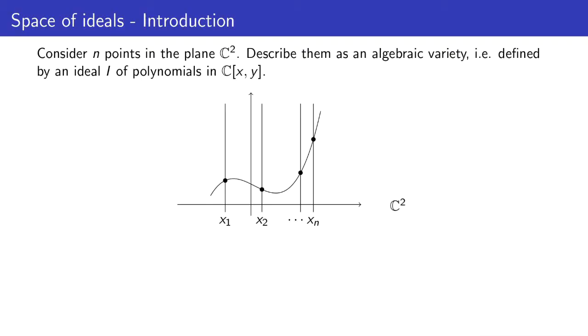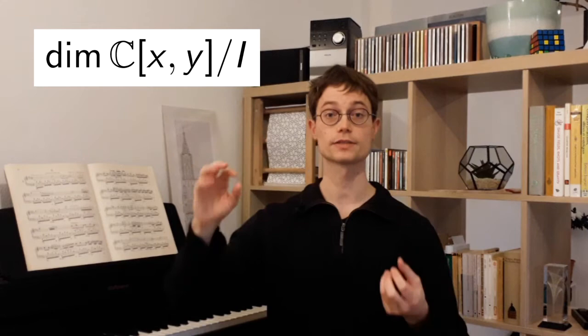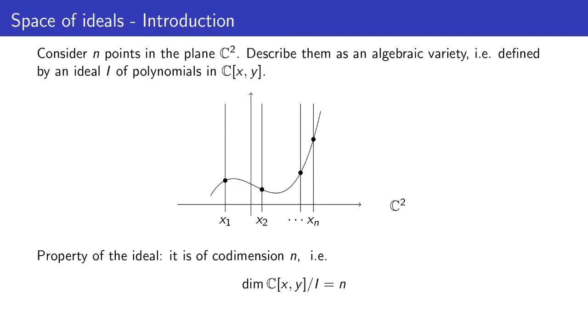The ideal is of co-dimension n, meaning that when I take the quotient of the polynomial ring in two variables C[x, y] and divide by the ideal I, I get a vector space of dimension n. This quotient C[x, y] divided by I is actually the function space of my algebraic variety. And in my case, these are only endpoints. So a function on endpoints is defined by its value on each point, giving a vector space of dimension n. The set of ideals with this property is already the punctual Hilbert scheme.